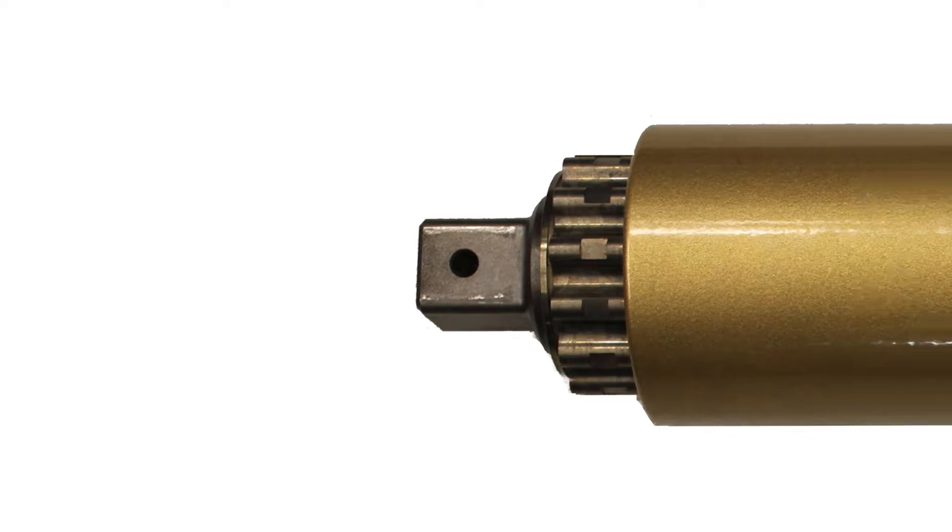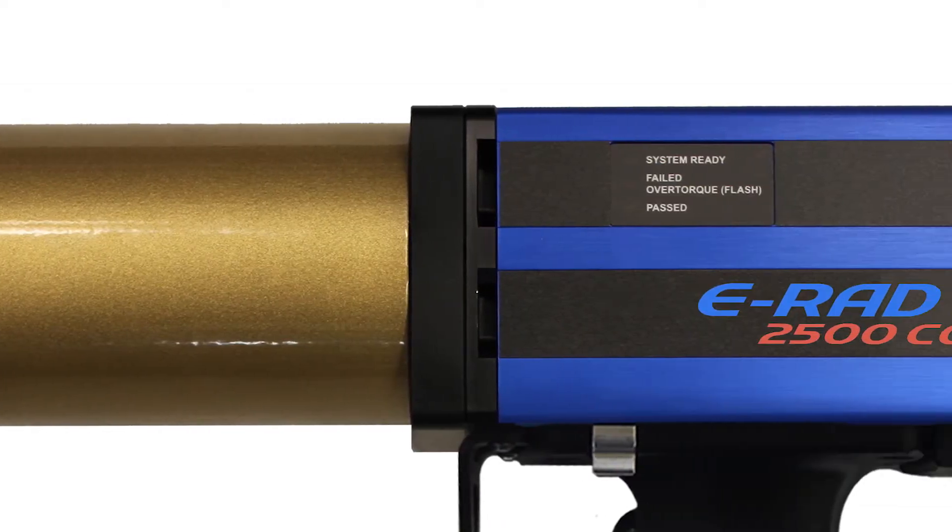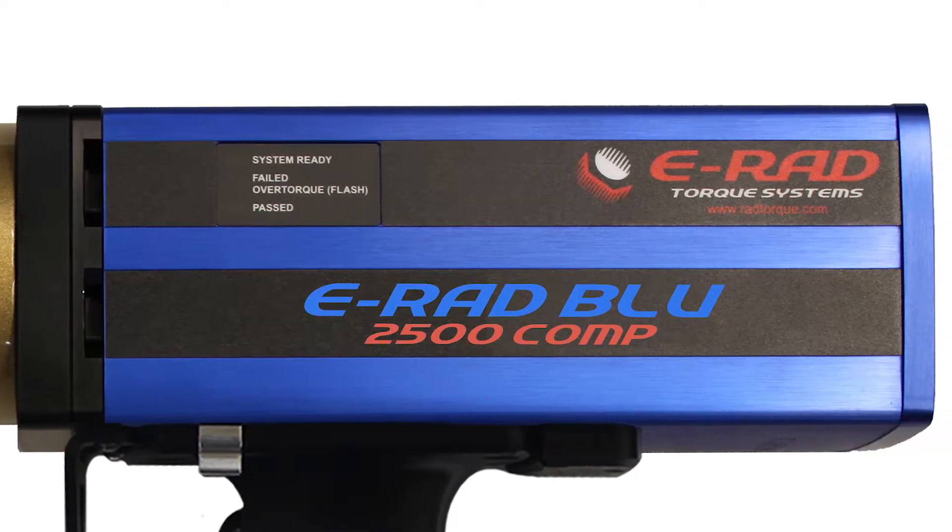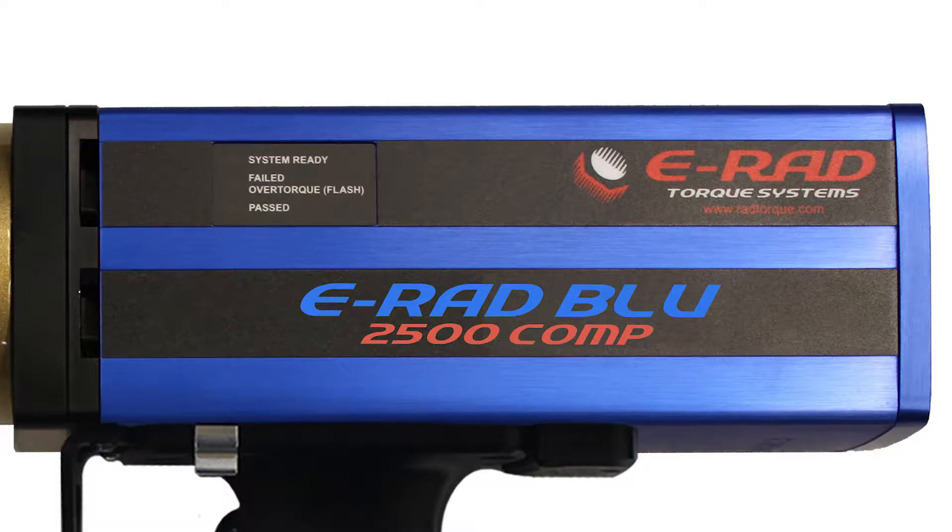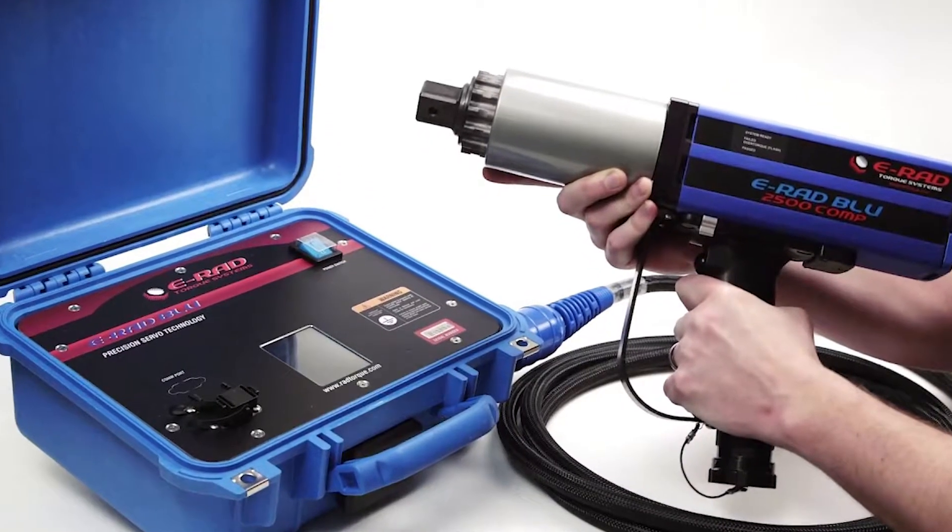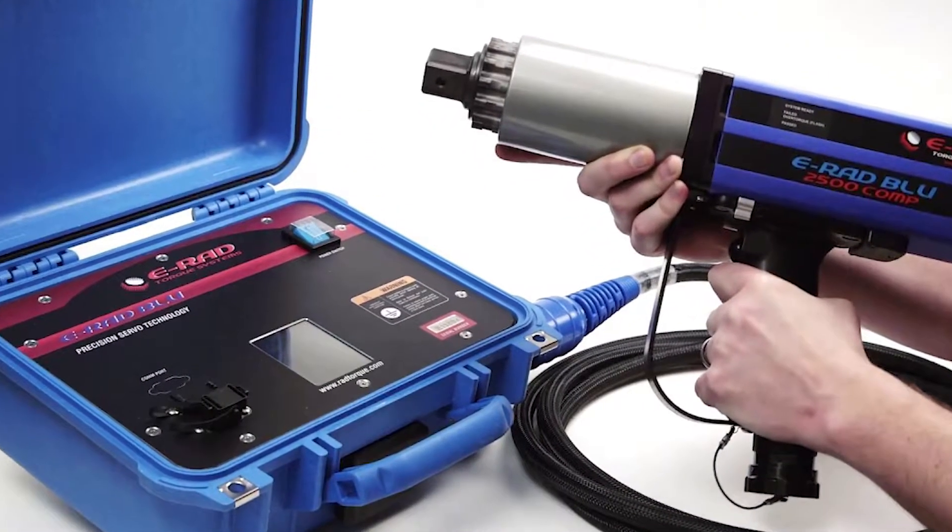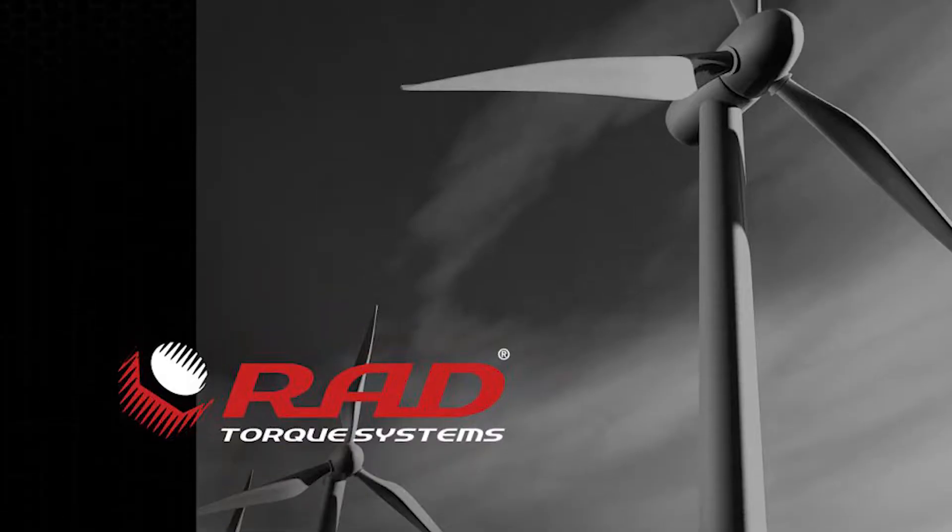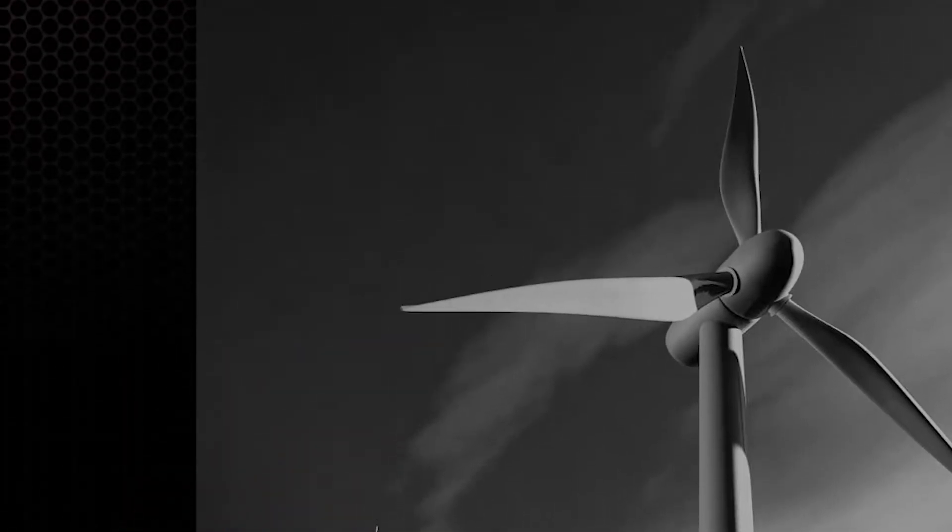Have you seen one of these out in the field? If not, you're missing out. This is the E-Rad Blue Precision Torque Wrench and it's designed to provide a high degree of accuracy for high torque assembly applications like tower sections, main bearings, T-bolts, and more.